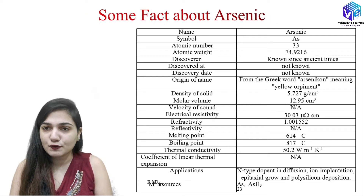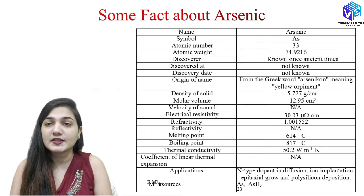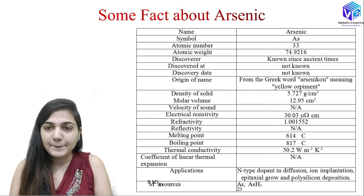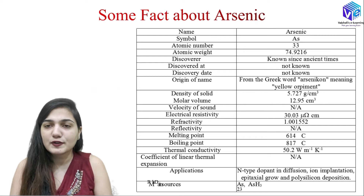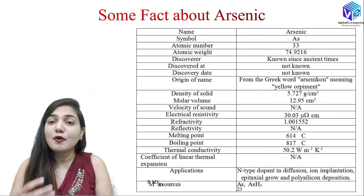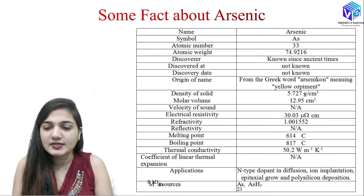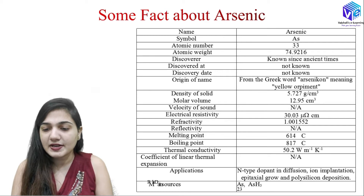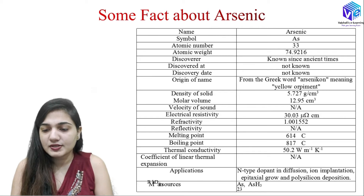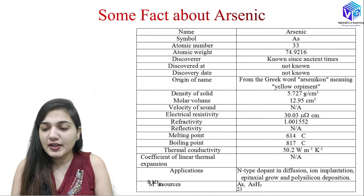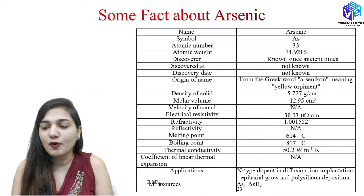Coming to arsenic — arsenic is also an n-type dopant, so we get an n-type doped region if we use arsenic as the dopant. Its symbol is As, atomic number 33, atomic weight around 75. It has been known since ancient times, so its discoverer and discovery date are unknown. Its name originates from the Greek word 'arsenicon' meaning yellow or pigment.